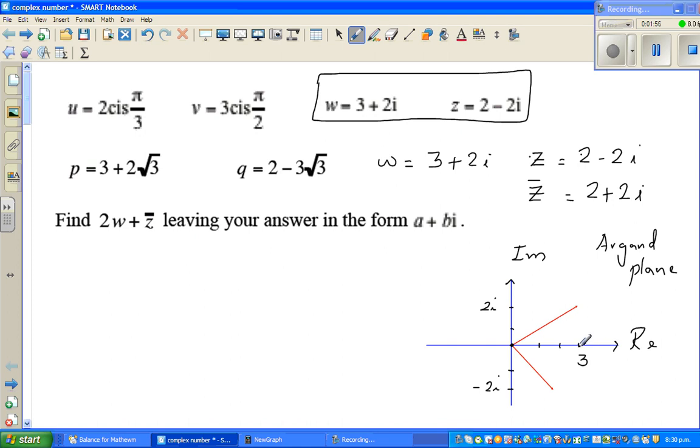This is 3 on the real axis and this is 2i on the imaginary axis. So this point in this plane is called W which is 3 plus 2i. And this is 2 on the real axis and minus 2i is on the imaginary axis. So this point is your Z which is 2 minus 2i.